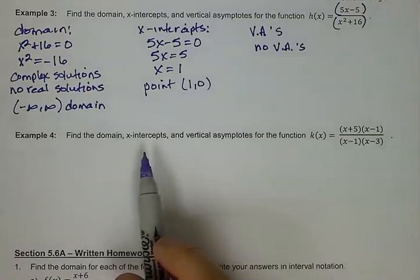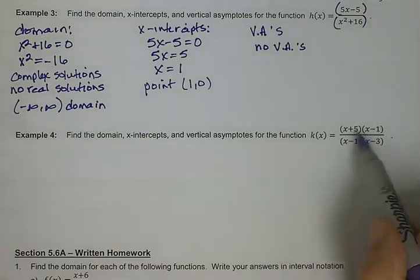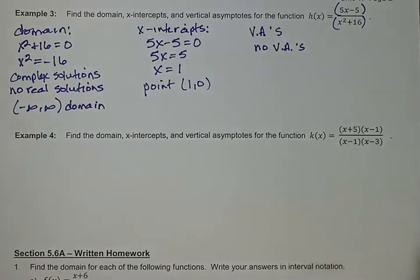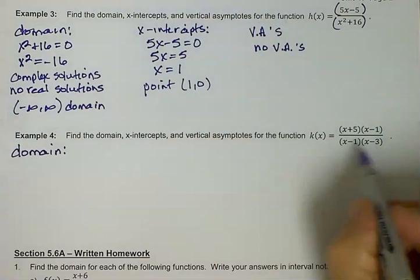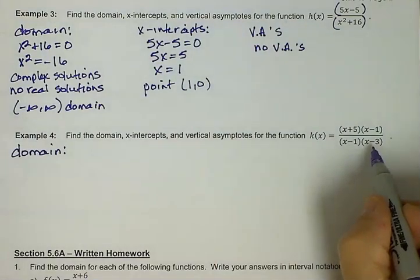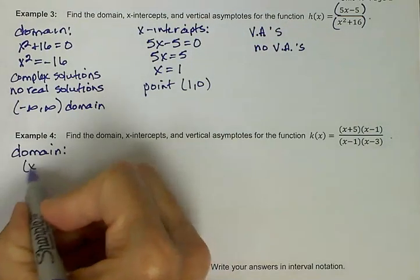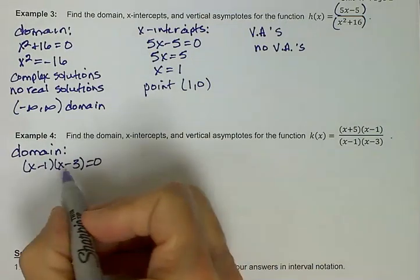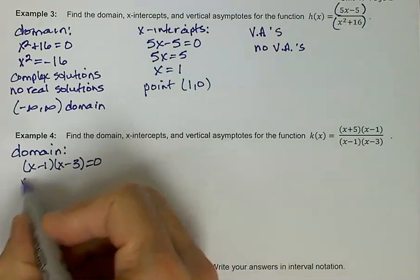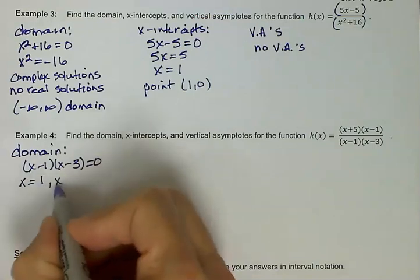Let's look at one more example for this. In this one, our function is in factored form on both the top and the bottom. That's going to make it a little bit easier for us to solve things. For our domain, we want to see what makes the denominator equal to 0. So really what we're doing is taking the denominator and setting it equal to 0. That's going to give us two solutions. x equals 1 and x equals 3.